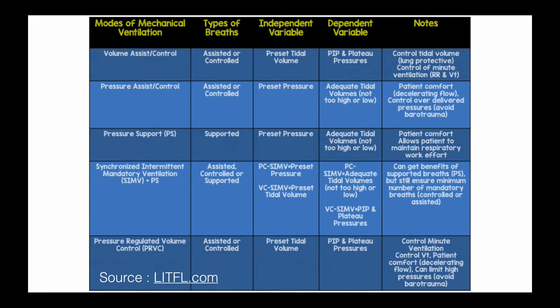Pressure support with an extra breath based on a rate means: if you set the rate to 12, you get 12 breaths per minute no matter what — of a preset volume, or a preset pressure, or a preset of both — in addition to whatever breaths you take on pressure support.